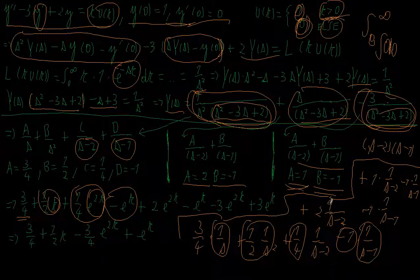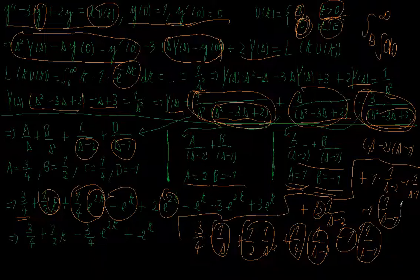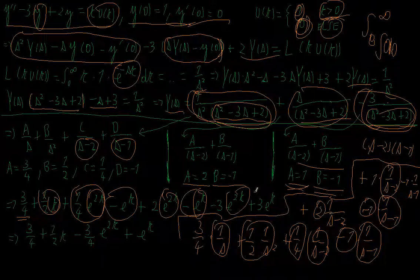The inverse Laplace transform of 1/(s minus 2) is again e to the 2t, and I have a 2 in front, so I have 2 times e to the 2t. The inverse Laplace transform of 1/(s minus 1) is again e to the t with a minus in front. And again here I have 1/(s minus 2) whose inverse Laplace transform is e to the 2t.